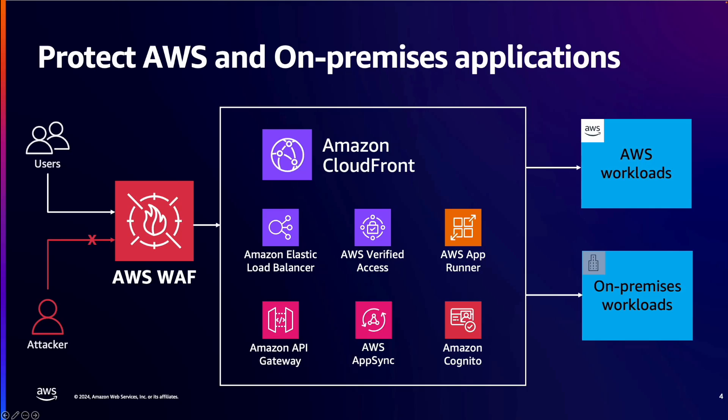For on-premises workloads, you can put a CloudFront distribution in front of your application and deploy AWS WAF with it. So let's go ahead and see how we can deploy baseline protections with AWS WAF in just a few clicks.